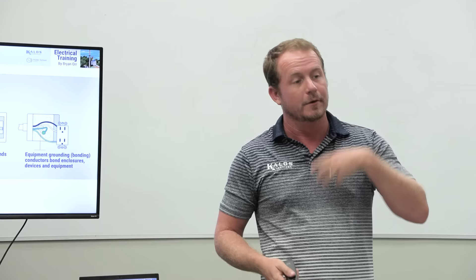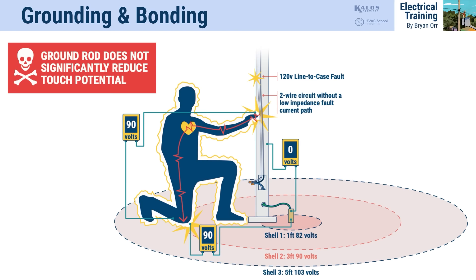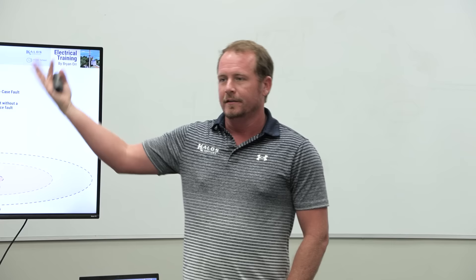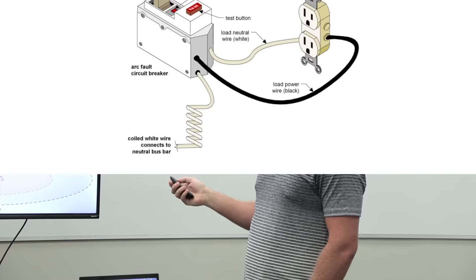Everything has to be connected all the way down the line. Ground rods aren't what save you—they're primarily there for transients: lightning and power line surges. That's mostly what they're there to dissipate.